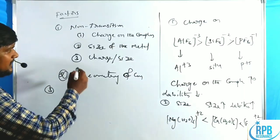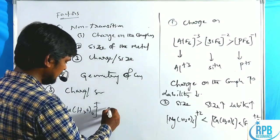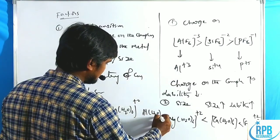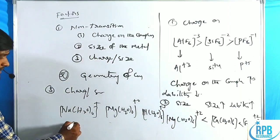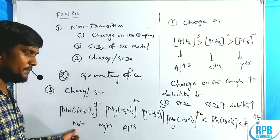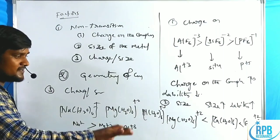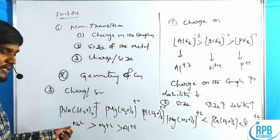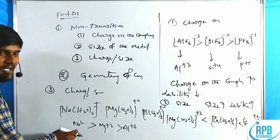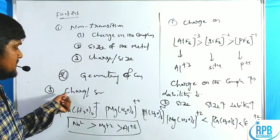Third case: charge-by-size ratio. Consider Na(H2O)6 +, Mg(H2O)6 2+, Al(H2O)6 3+. The charges are Na+, Mg2+, Al3+. According to the first rule, charge on complex increases means lability decreases. According to the second rule, Na+ is bigger than Mg2+, which is bigger than Al3+, so more size gives more lability. Both factors are obeyed here, giving the charge-by-size ratio lability order.